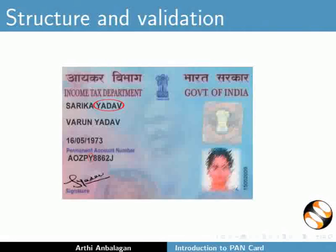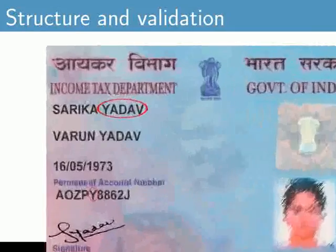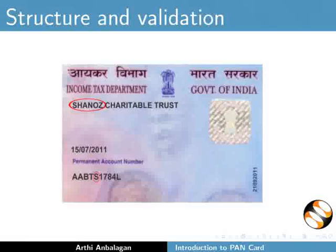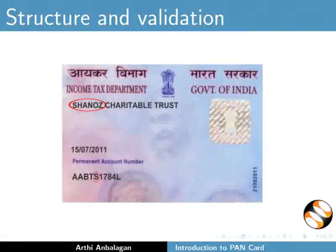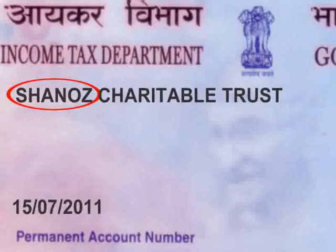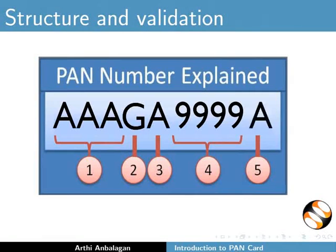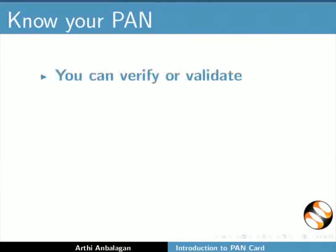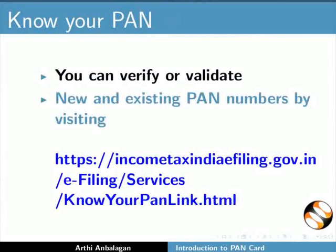The fifth character is the first character of the surname of the person in the case of a personal Pancard. For example, in the image shown, the surname is Yadav, therefore the fifth character is Y. The last character is an alphabetic check digit. The date of issue of the Pancard is mentioned on the right hand side of the Pancard.